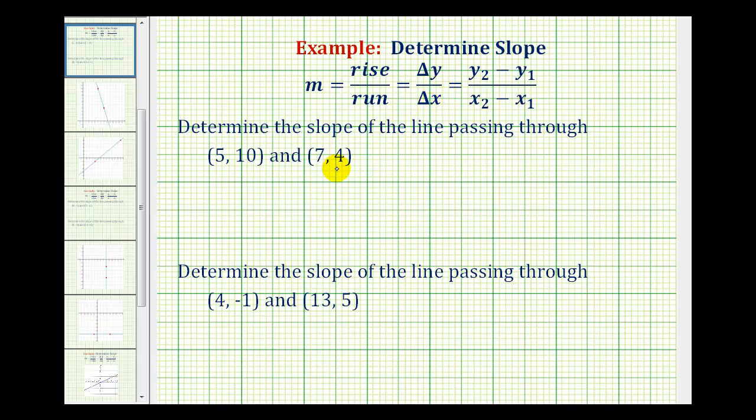If we're given two points on a line, we can determine the slope by determining the change in the y-coordinates with respect to the change in the x-coordinates. Notice how we use these subscripts to keep track of the coordinates. If we call these the ones and these the twos, this would be x sub 1, y sub 1, x sub 2, and y sub 2.